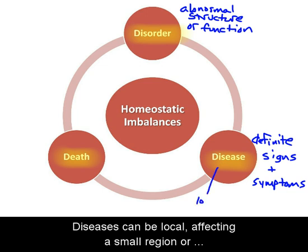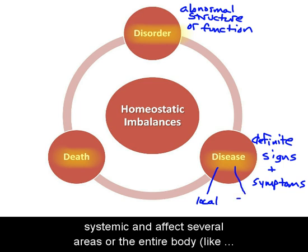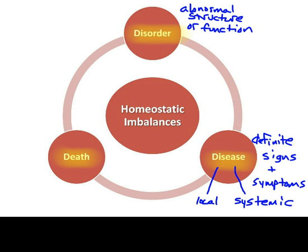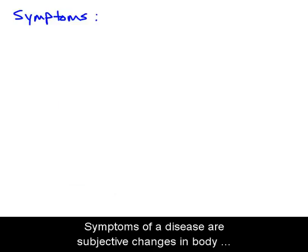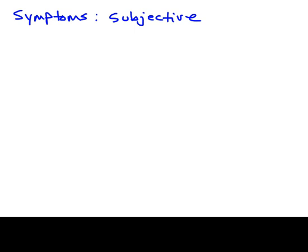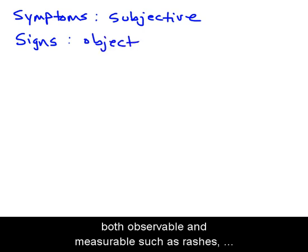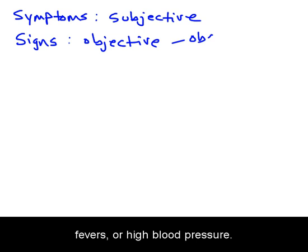A disease is a more specific term for an illness having a definite set of signs and symptoms. Diseases can be local, affecting a small region or one area of the body, like an ear infection, or they can be systemic and affect several areas or the entire body, like cardiovascular disease. Symptoms of a disease are subjective changes in body functions that are not visible to an observer, such as anxiety and headaches. Signs, on the other hand, are objective changes that are both observable and measurable, such as rashes, fevers, or high blood pressure.